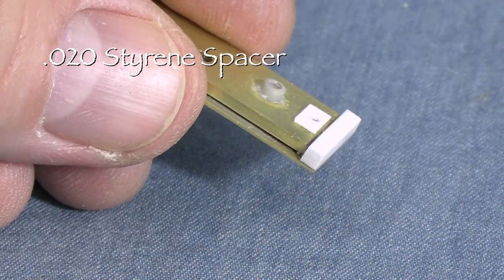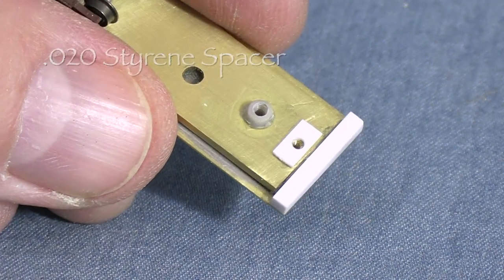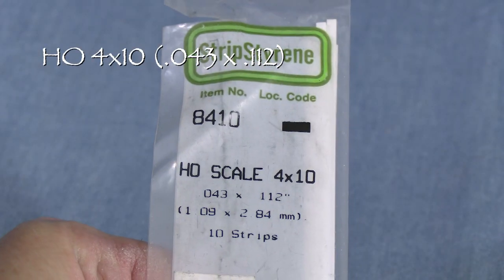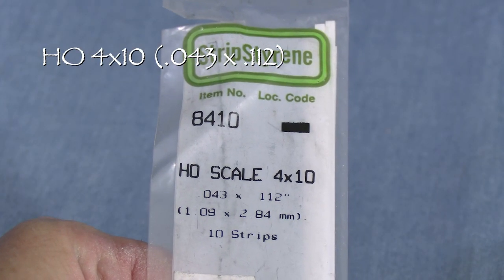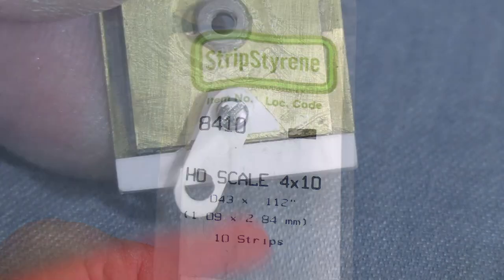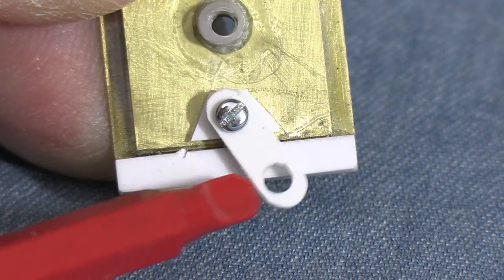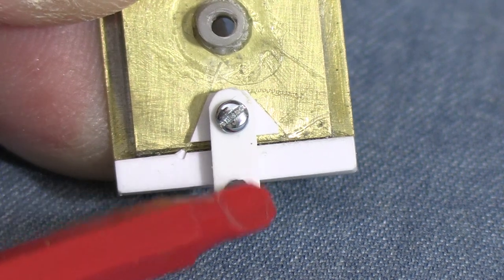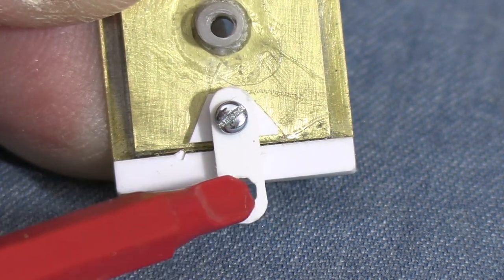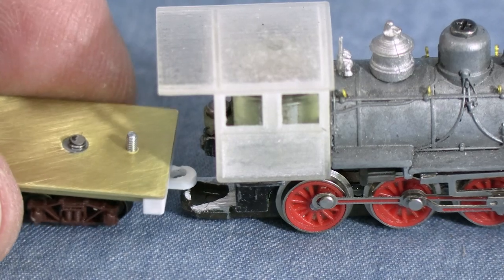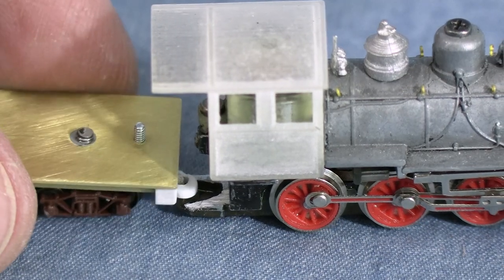I drilled a hole near the front of the tender and tapped it for a 0090 screw. I added a piece of 20,000 styrene as a spacer glued to the tender frame. This'll put the drawbar down below the level of the end beam. My drawbar is just a piece of HO-scale 4x10 strip styrene with a couple of holes drilled in it. The size isn't critical, it just has to fit. Using plastic is a precaution to eliminate any possibility of electrical shorts between the engine and tender.